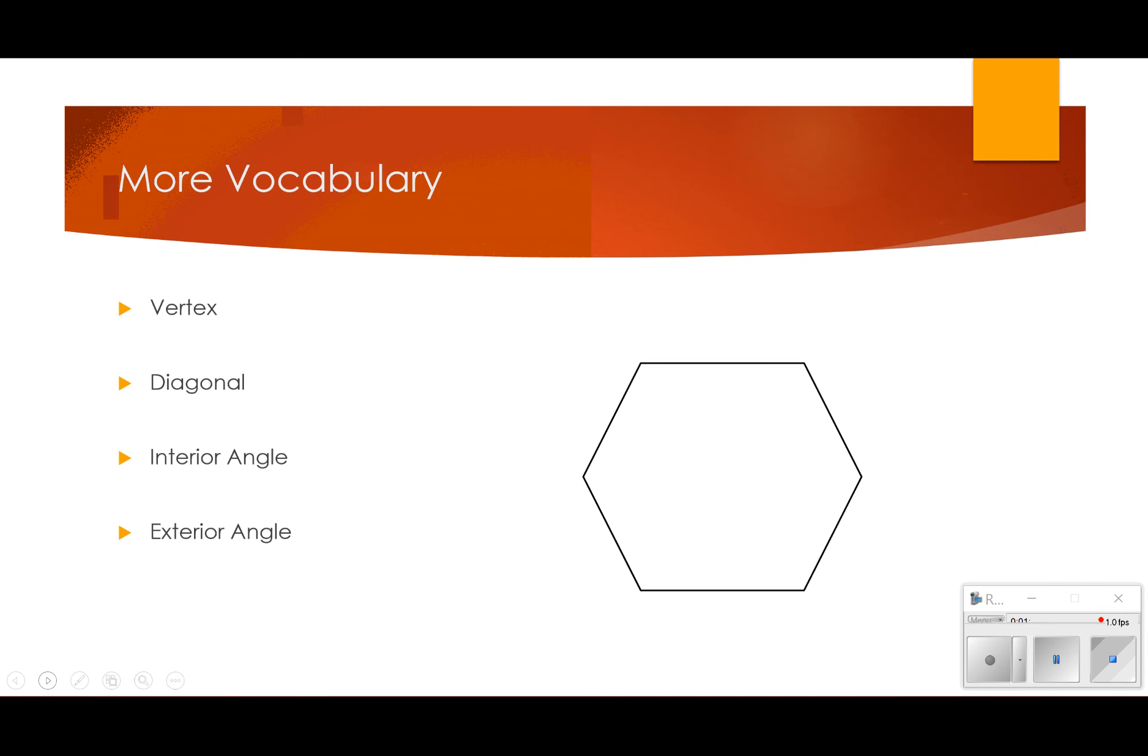All right. In a polygon, the vertex is just the corners, basically. So these two points right here are vertices. A diagonal goes from one vertex to another. So this would be a diagonal, but it's a straight line, not a squiggly little line like I've drawn.